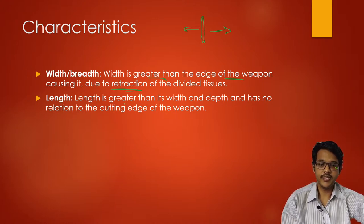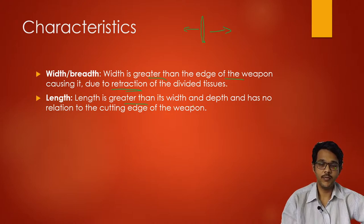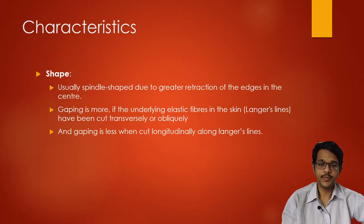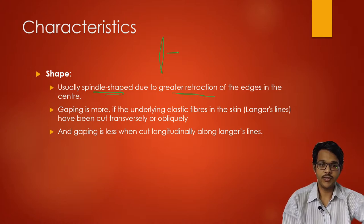The length is greater than the width in incised wounds, as the person who is incising may drag the weapon. So length will be more than the width and depth, and has no relation with the cutting edge of the weapon. The shape is usually spindle-shaped due to greater retraction of the edges.